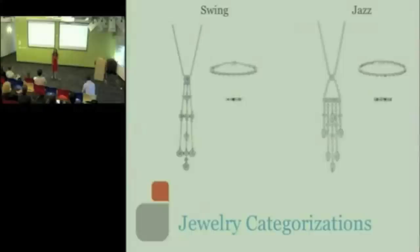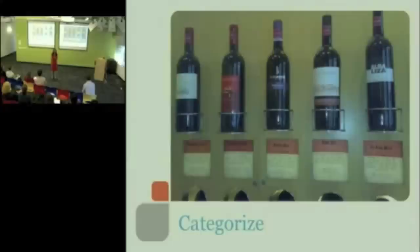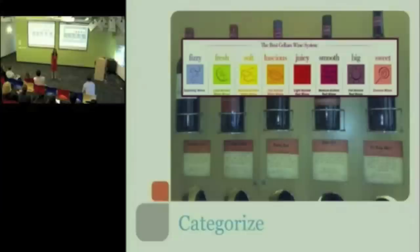So, one of my favorite examples of really good categorization is this store called Best Cellars. Maybe some of you went to this store before it got bought out by A&P. It was rated as the number one wine shop by the Wine Enthusiast Magazine in 09. It only offers you 100 different bottles of wine. Divide it up into eight categories. The category names really make sense to me. They're like fizzy, juicy. Okay, I get that.